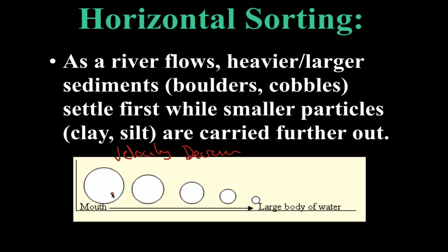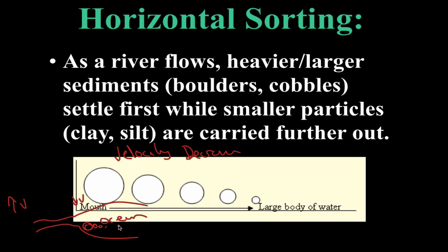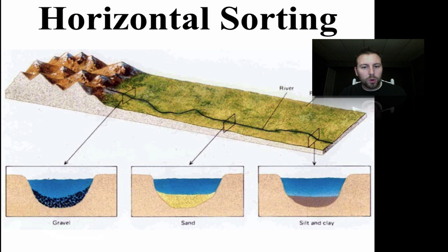Only the smallest particles are carried the farthest. Right where the river enters the large body of water, if we look from above, the river opens up into an ocean. We have increased velocity in the river, then a decrease in velocity at the mouth. Our big particles settle here, and they get smaller and smaller as we move outward.